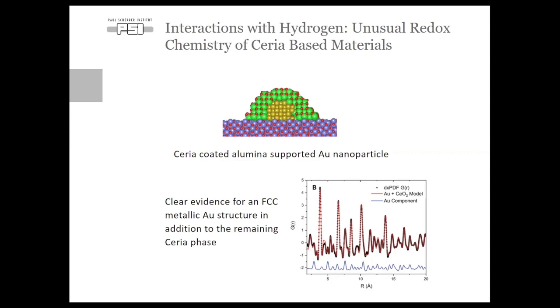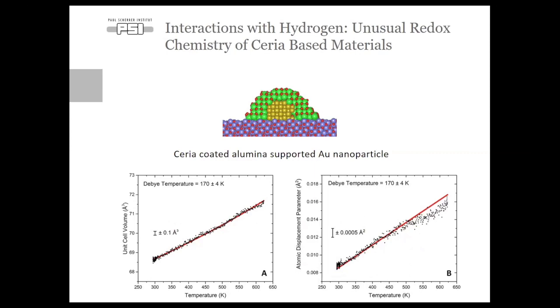So, from the PDF, we can see quite clearly there is evidence for an FCC metallic structure, and in addition, a cerium phase. The alumina phase is not represented here because we have removed it from the I of Q. So, what does this give us? Well, we can look at the individual phases present in this material, and this time I'm going to focus mainly on the gold. So, we can follow the lattice parameter or the unit cell volume, and we can also follow the atomic displacement parameter, so the U isotropic. This gives you some measure of the disorder or thermal disorder within the material.